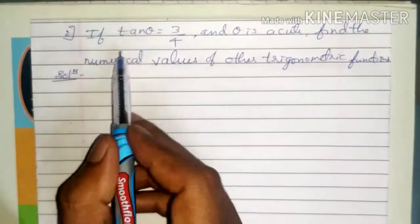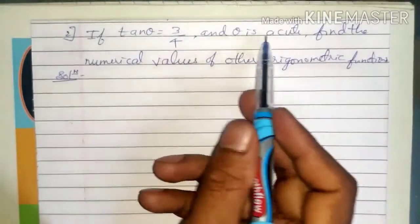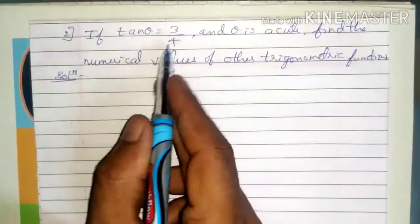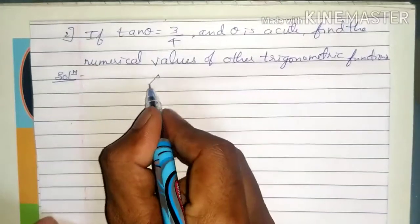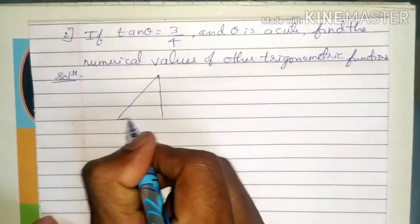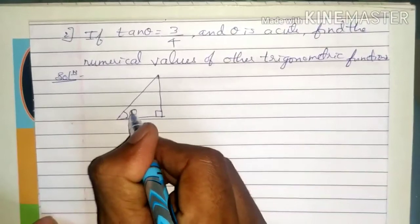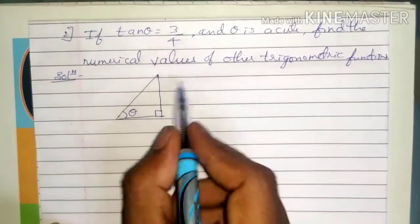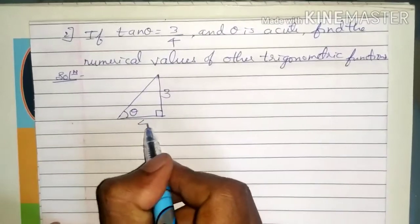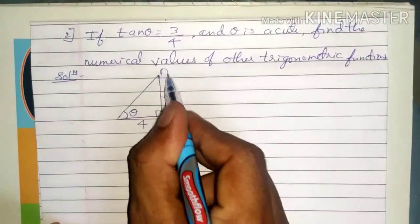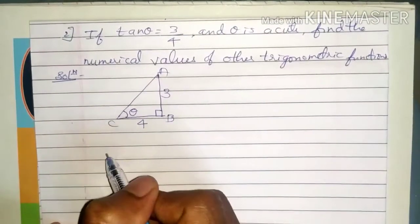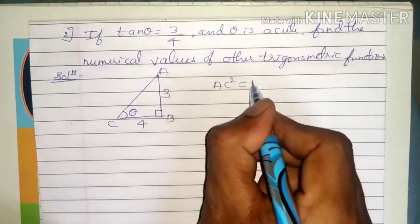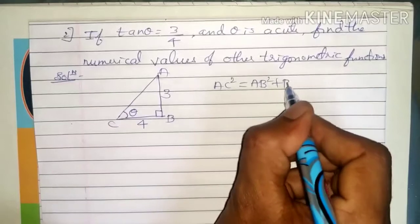Next problem: if tan theta equals 3 by 4, find the numerical values of the other trigonometric functions. Tan theta is given, so draw a right angle triangle with 90 degrees at one corner and theta at another. Tan theta means opposite by adjacent, so opposite is 3 and adjacent is 4. We have to find the hypotenuse, AC.